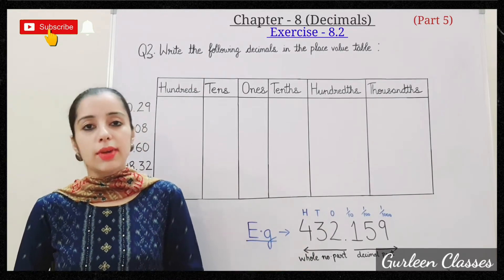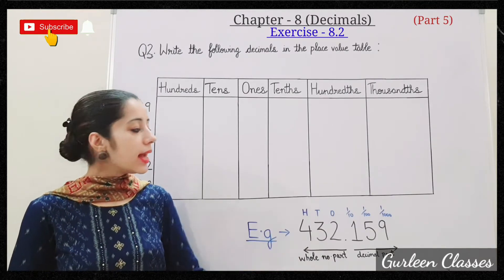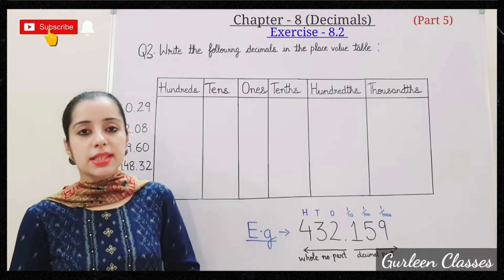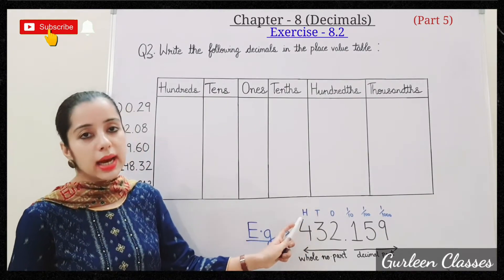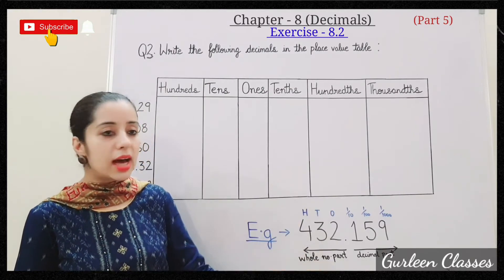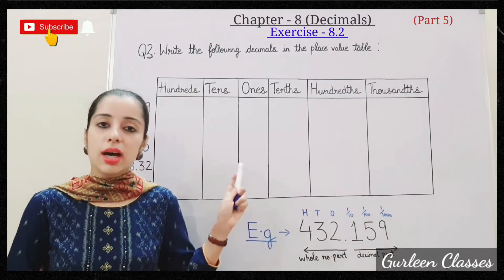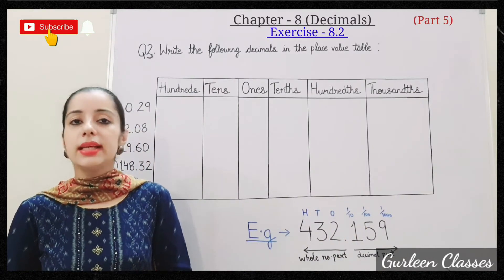432.159. Decimal point left side we have the whole number part and right side we have the decimal part. So decimal point left side, the very first number is ones, then tens, then hundreds, and decimal point right side we have tenths, hundredths, and thousandths. So here we have drawn the place value table.